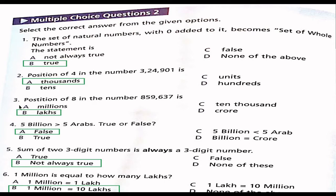Question 3: Position of 8 in the number 859,637 is option A million, option B lakhs, option C ten thousand, option D crores. The right option is lakhs. This is 8 lakhs, therefore B is the right answer.